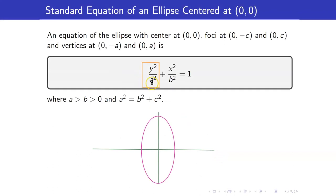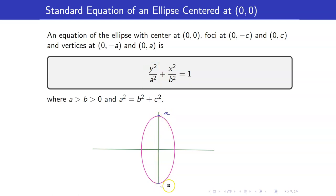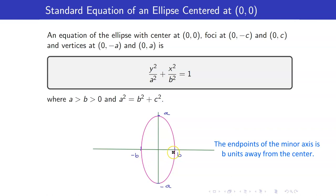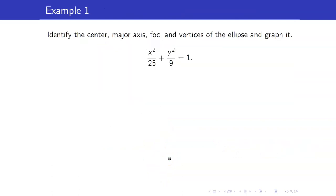If a appears with the variable y, the major axis will be a vertical line — in that case, the y-axis. In both cases, the endpoints of the minor axis will always be b units away from the center.